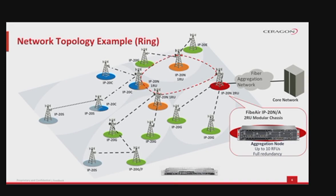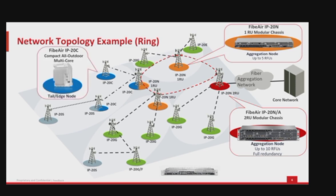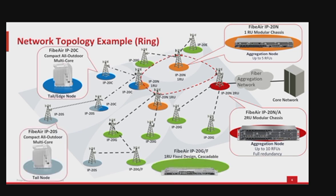Please note that IP20G, IP20GX, IP20S, and IP20F are interoperable over the radio link with IP20N. Also note that a radio link cannot be established between IP20C and IP20N, or between IP20C and IP20F, where the same product type must be at both ends of the link.